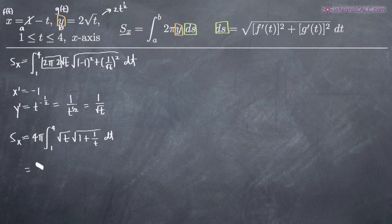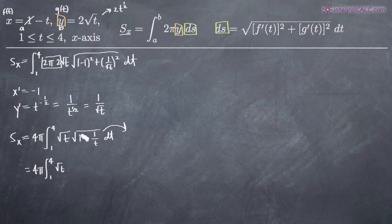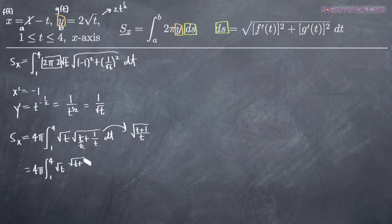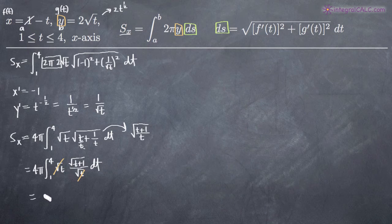To find a common denominator inside that square root, we transform the one into t over t, giving us t plus one over t. We can then take the square root of the numerator and denominator separately: the square root of t plus one over the square root of t. Multiplying by the square root of t out front, the two square root of t terms cancel, and we're left with the integral of four pi times the integral from one to four of the square root of t plus one dt.